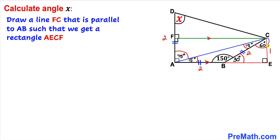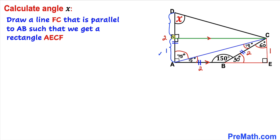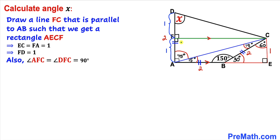Since AECF is a rectangle, opposite sides are equal, so AF equals EC, meaning AF equals 1 unit. We know the full side AD is 2 units and AF is 1 unit, so DF equals 1 unit as well. Therefore FA and FD are both 1 unit each, and angles AFC and DFC are both 90 degrees.